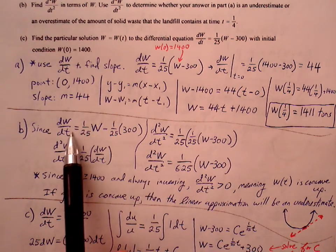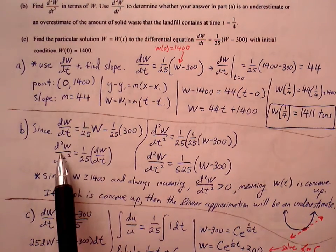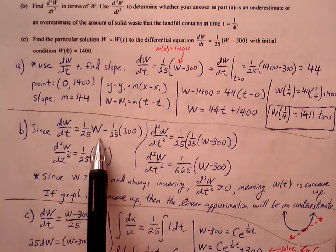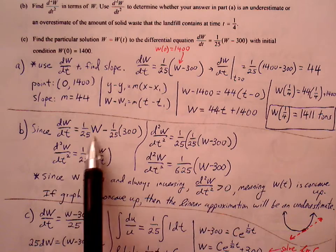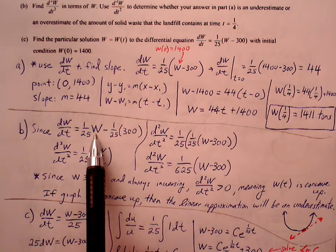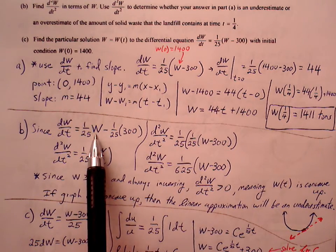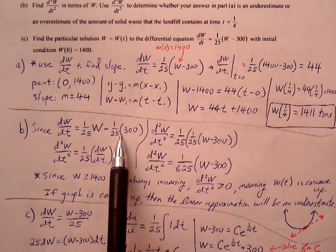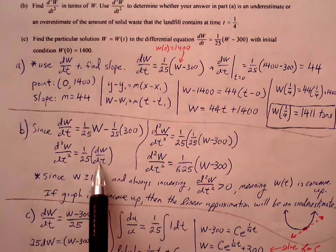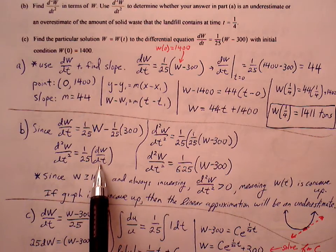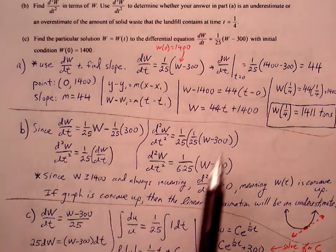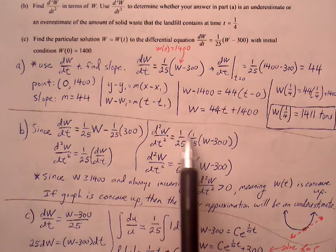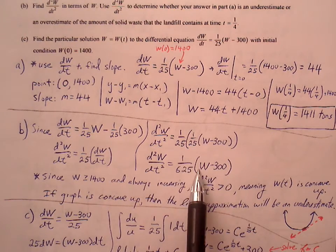So I'm going to find the derivative. dW/dt becomes d²W/dt². 1/25(W) becomes 1/25, W becomes 1, but because we're finding the derivative with respect to time, W becomes dW/dt. And then the constant goes to zero. We'll go ahead and replace dW/dt back in terms of W. So 1/25 times (W - 300). Multiply this out, we get 1/625(W - 300).